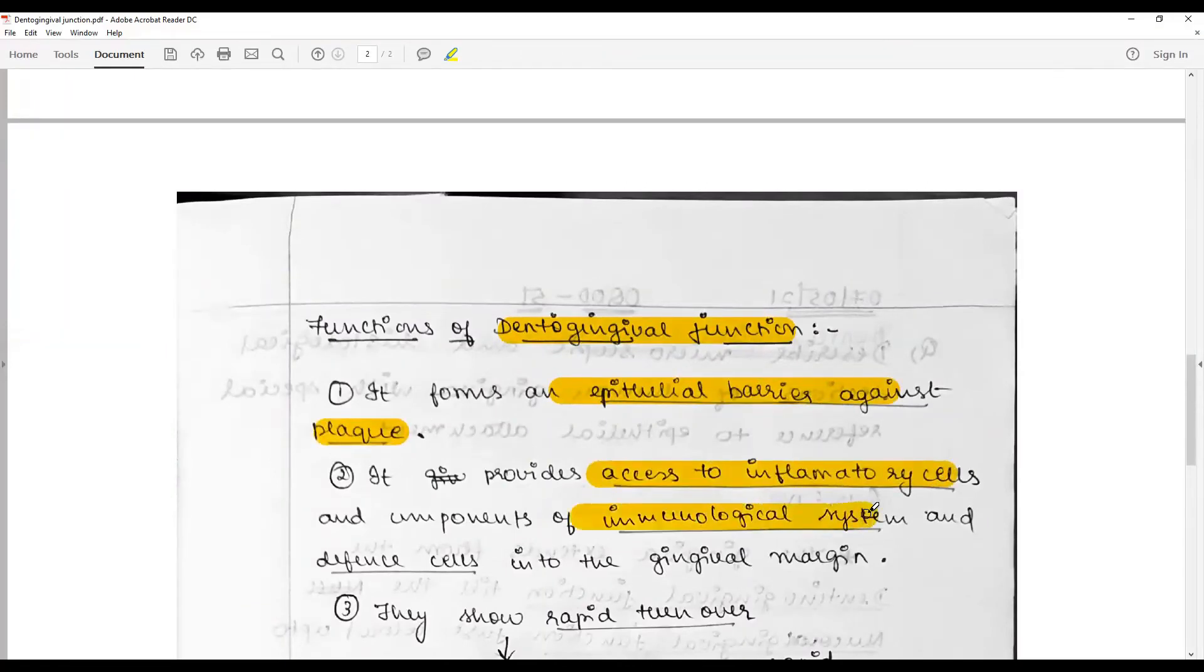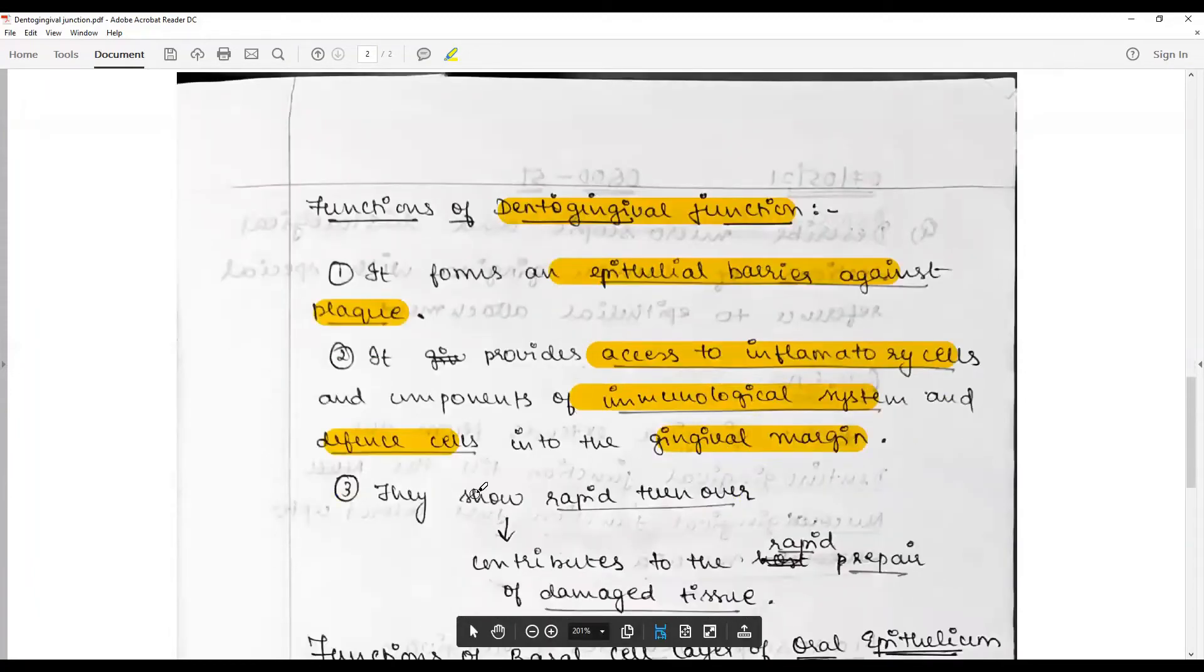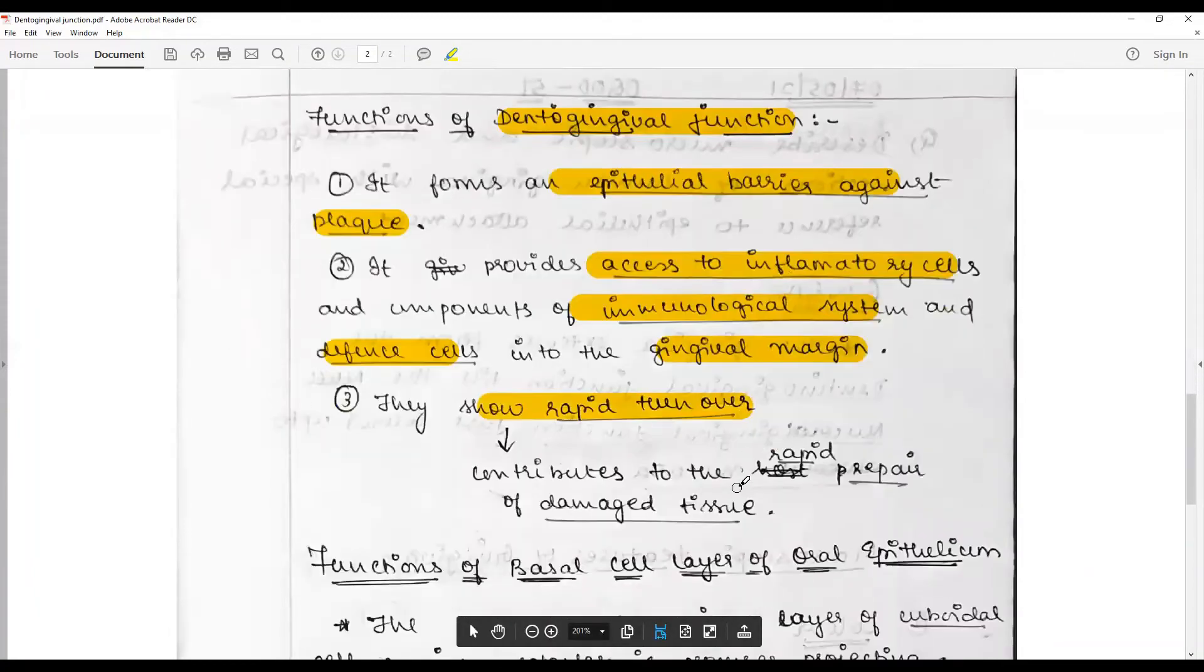It provides access to inflammatory cells and components of the immunological system into the gingival margins. They show more rapid turnover and thereby contribute to early repair of damaged tissue.